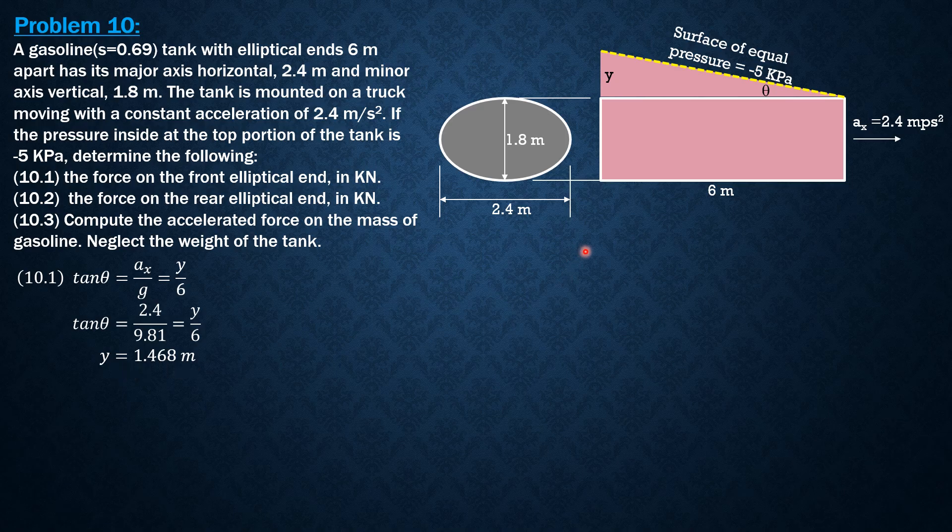Having found y, we can now compute the forces on the ends of the elliptical tank. First for the front end. So we call the force on the front end as F sub f. Since there is initial pressure, I will use pressure at the centroid times area instead of gamma bar h, because the product of gamma of gasoline and bar h is still pressure at the centroid. But since there is initial pressure of negative 5, we will compute for the pressure at the centroid times area.